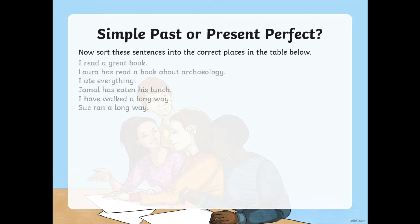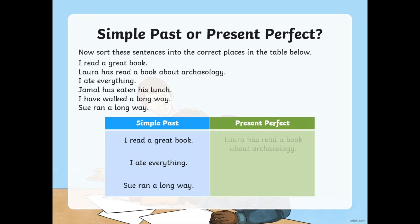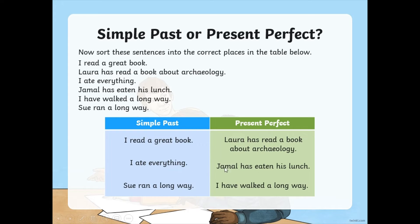Now sort these sentences into simple past or present perfect. Simple past is an action that started and finished in the past; present perfect began in the past but is still continuing now. 'I read a great book. Laura has read a book about archaeology. I ate everything. Jamal has eaten his lunch. I have walked a long way. Sue ran a long way.' Look for those auxiliary verbs — has or have — to give you that clue. Simple past: 'I read a great book', 'I ate everything', and 'Sue ran a long way'. Present perfect: has read, has eaten, have walked. Has and have are really key to finding those present perfect sentences.